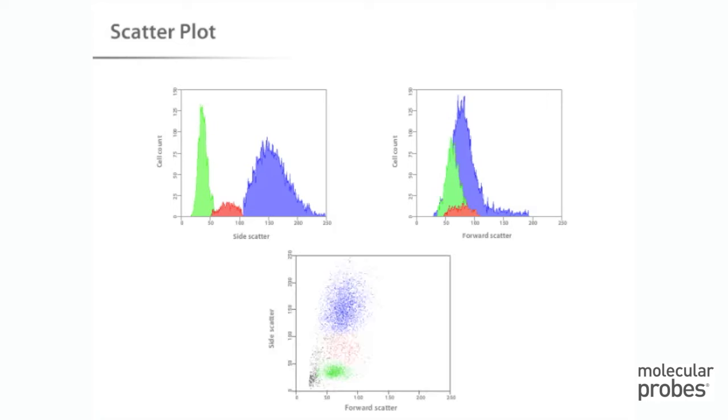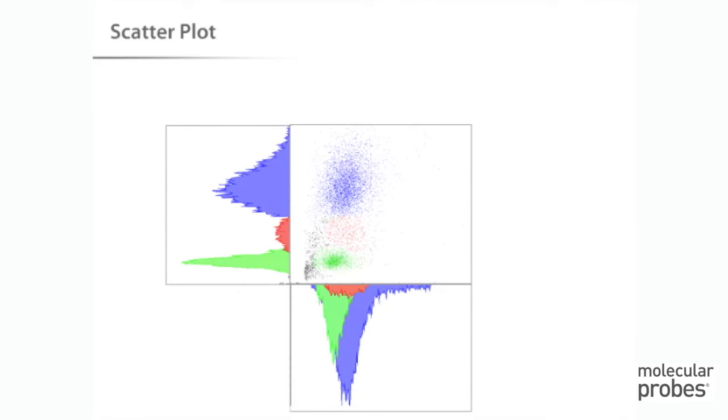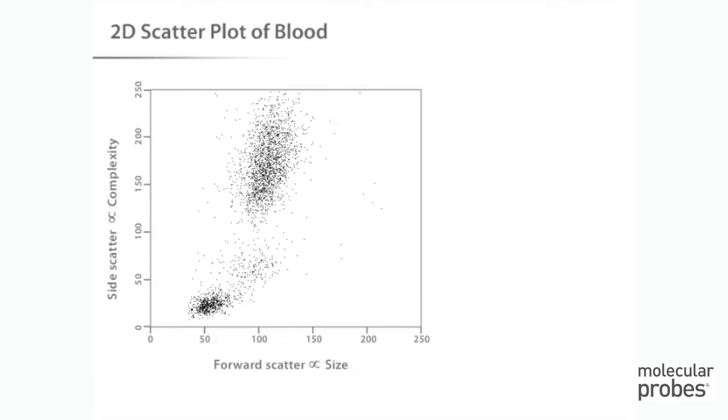This is done through the use of two-dimensional dot or scatter plots. You can see that the peaks from the forward and side scatter histograms correlate with the colored dots in the scatter plot. Now we can view the results obtained when we create a scatter plot using forward and side scatter data from a typical peripheral blood cell run.